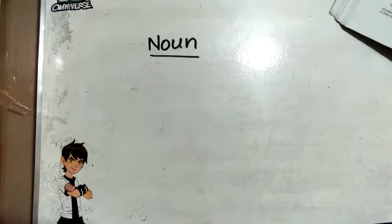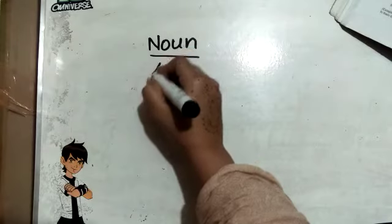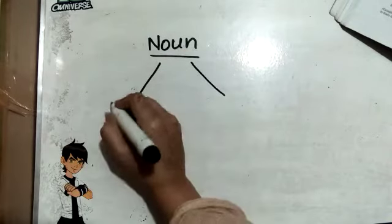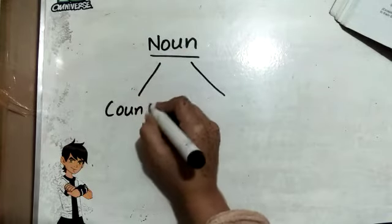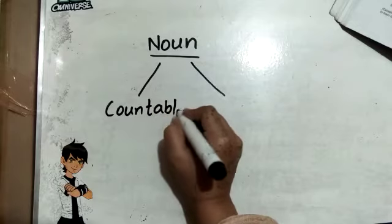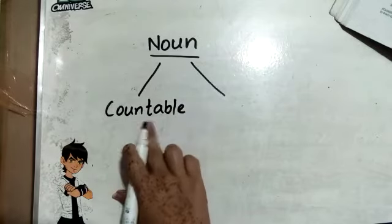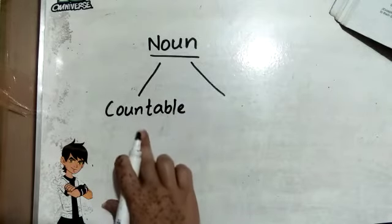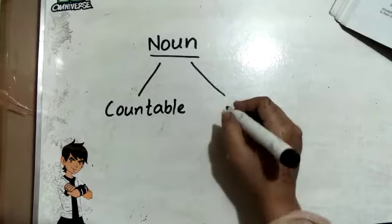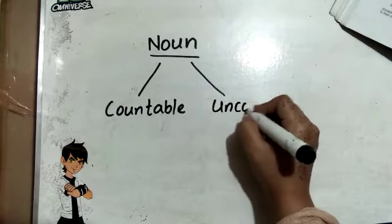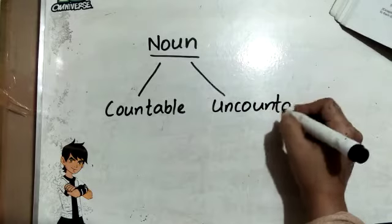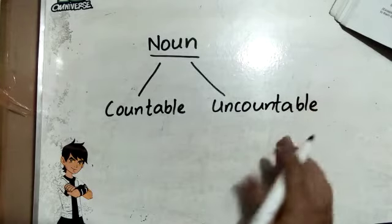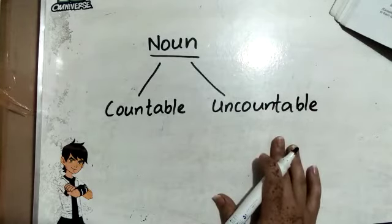And this chapter is related to countable and uncountable nouns. So here we have two types of noun. First is countable, meaning the noun that can be counted is known as a countable noun. The second type of noun we have is uncountable noun, meaning those nouns that cannot be counted are known as uncountable nouns.